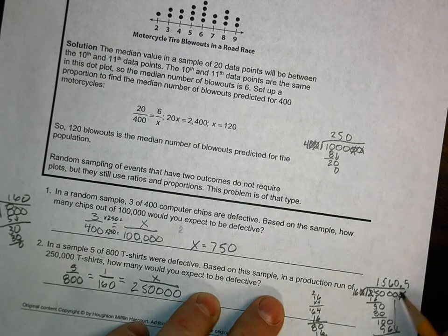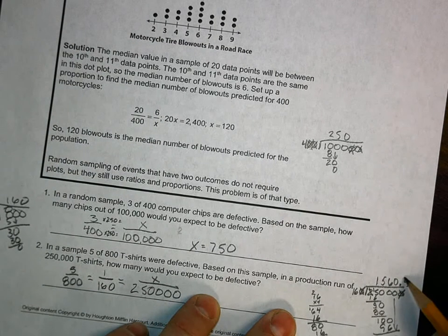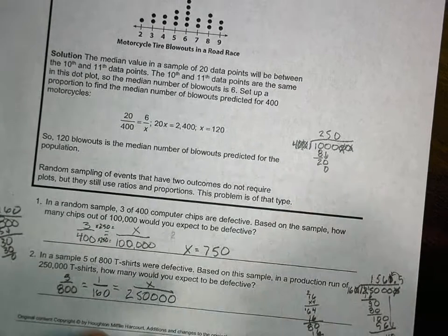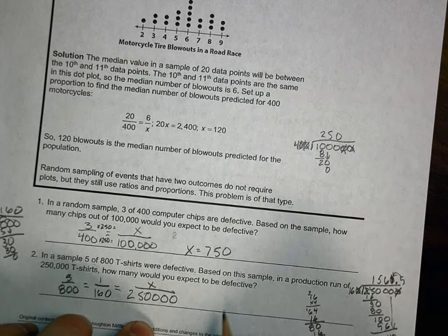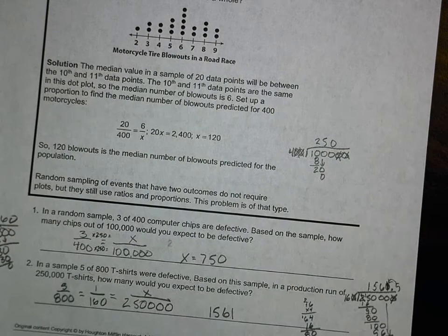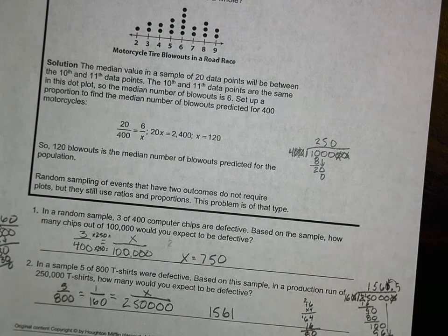We can't have half a t-shirt defective. Since it's 5 or greater, it's going to cause this to round up by one. So I could expect 1,561 t-shirts out of 250,000 to be defective.